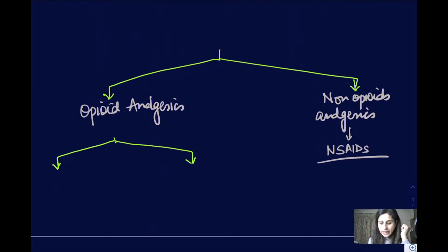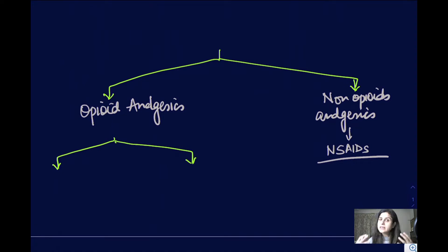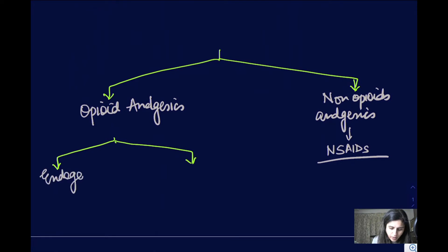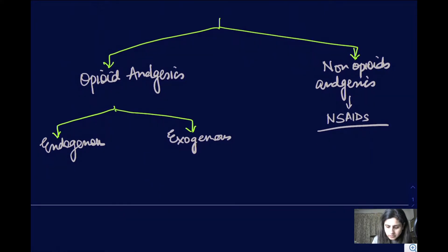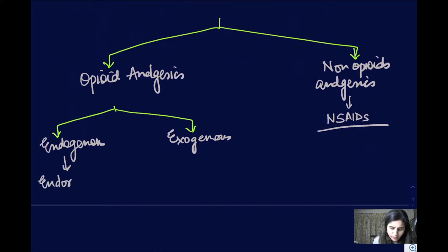Opioids can also be classified as endogenous — present in our body itself — or exogenous, meaning we give them from outside as drugs. Endogenous opioids that naturally exist in our body include the endorphins, enkephalins, and dynorphins.